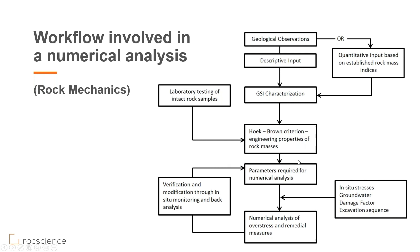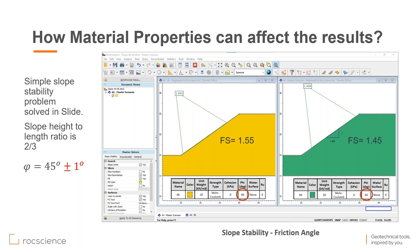RS Data comes in and helps us with the top portion of these activities — getting the parameters required for numerical analysis, then doing the numerical analysis. Just to emphasize how important it is to have these parameters correctly defined, I'm showing you two simple examples. This is a simple slope stability problem solved in Slide. The slope height-to-length ratio is 2.2 over 3, and the general friction angle assumed for this material is 45 degrees.